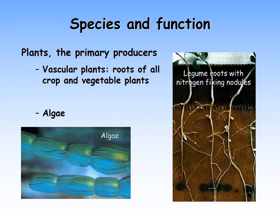Soil organisms also include the roots of plants we are familiar with, as well as plants we are less familiar with — the algae. Plants are very important soil organisms because they are the primary producers, or autotrophs: they utilize water, energy from sunlight, and carbon dioxide from the atmosphere to make their living tissue, generating energy and making glucose during photosynthesis. Plants pump a lot of organic material into the soil; crops like corn, wheat, and beans leave roots in the soil amounting to about 25 percent of the above-ground yield.